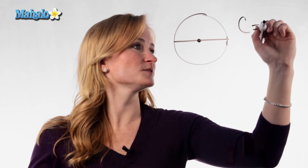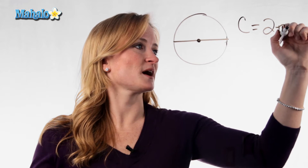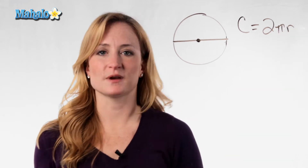Hey, this is Julie with Mahalo.com and I'm going to talk to you about finding the circumference of a circle. The formula for circumference most often seen is C equals 2 times pi times the radius.